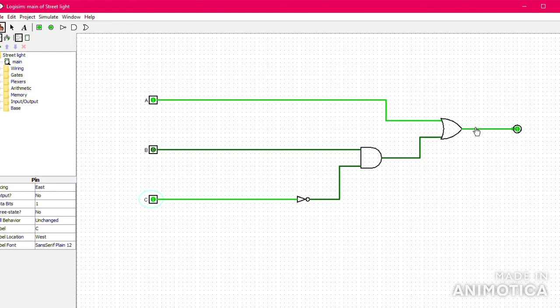When A and B are equal to one but C is equal to zero, the output will be one. When A and B are equal to one but C is equal to zero, the output will be one. When all inputs are equal to one, then the output will be one.